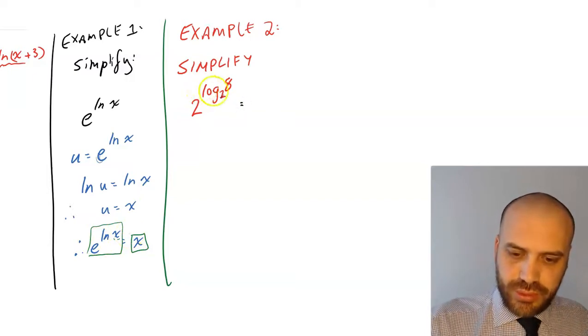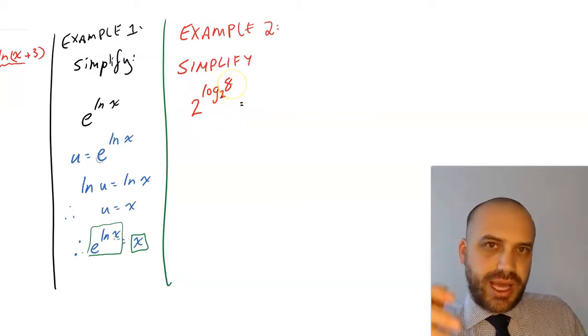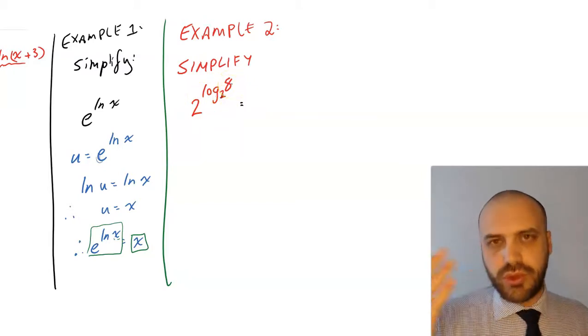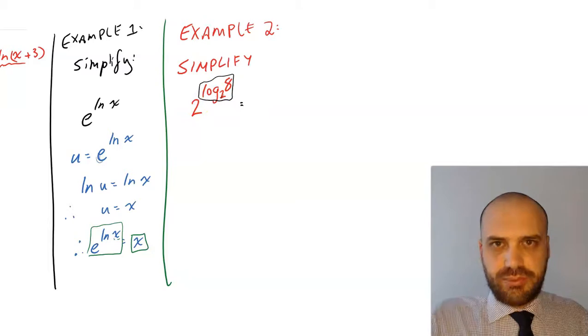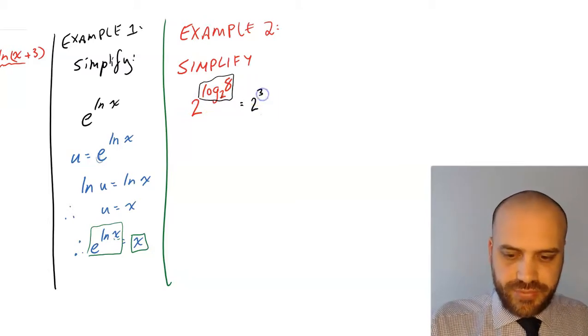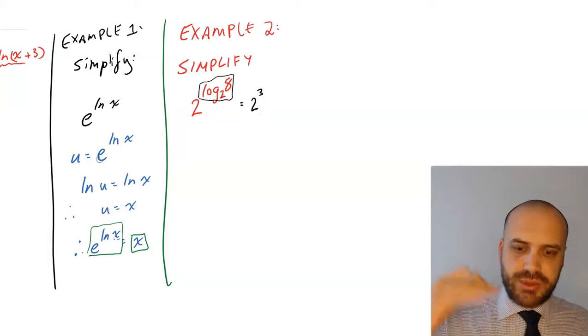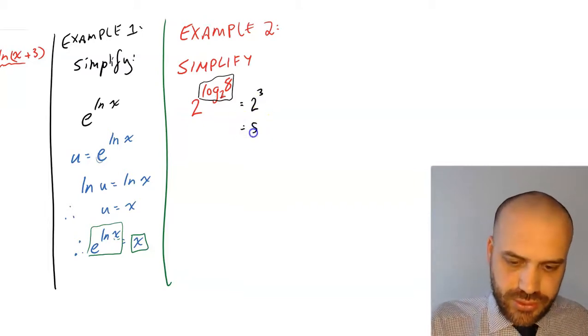2 to the log base 2, 8. Now, log base 2, 8 means what could I raise 2 to the power of to get the number 8? Which means that this whole thing here just simplifies to be the power, to be 3. So log base 2, 8 is the same as 2 to the 3, which is equal to 8.